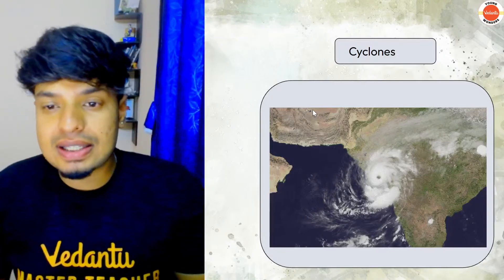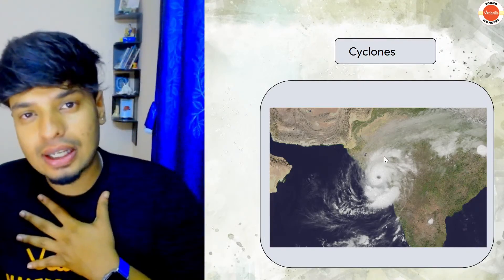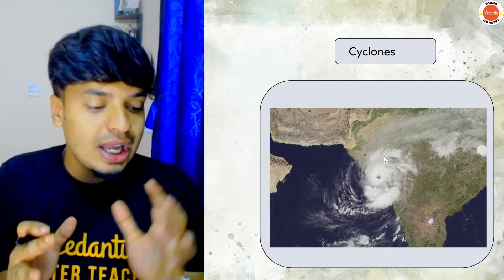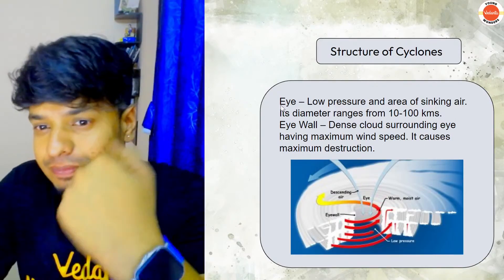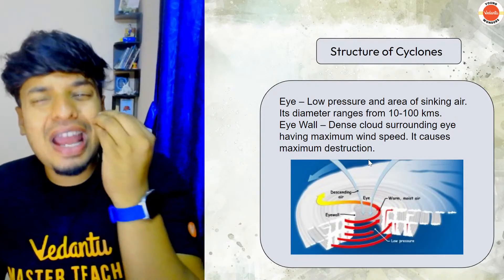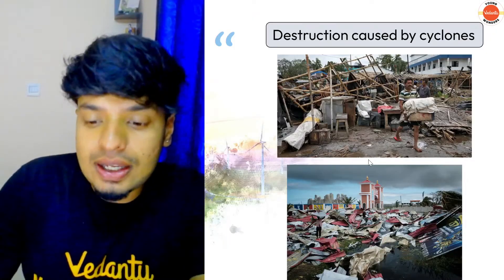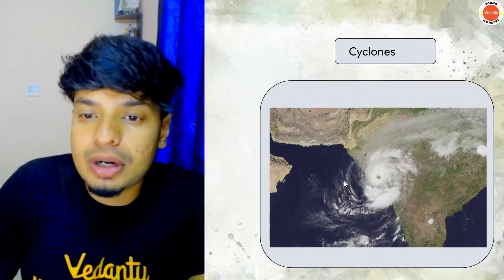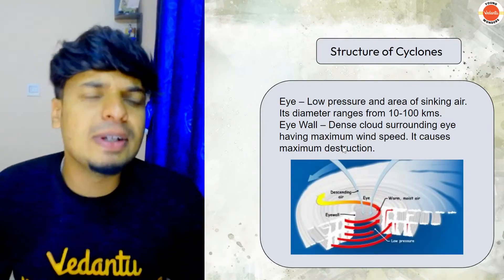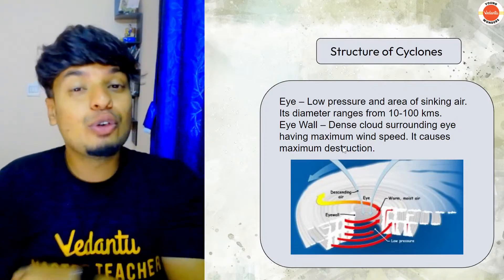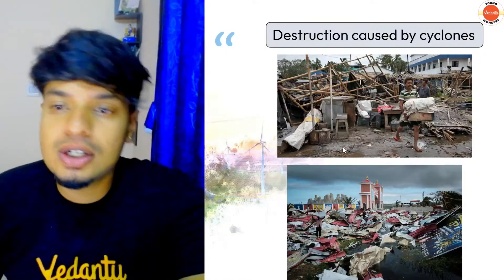This is how a cyclone looks from space — we can see it through satellites and predict its arrival to warn people. The cyclone has an eye in the center — the eye is the middle part where there is very low pressure, a calm area with no clouds. The diameter of the eye ranges from 10 to 100 kilometers. The eye wall is a dense cloud surrounding the eye with maximum wind speed — if you stood there you would be blown away, trees fall, cars are thrown away.